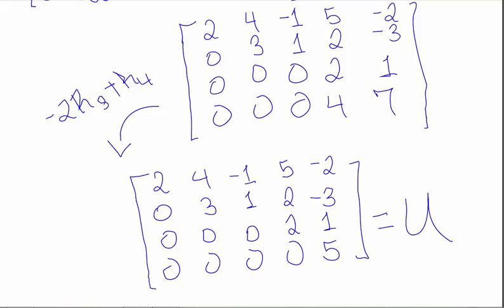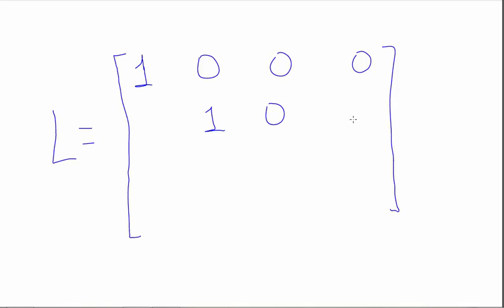And now we'll work on L. So L, since our original matrix had 4 rows, will be a 4 by 4 matrix. It's a lower triangular. And the diagonals are 1s. So the sequence of row operations I did to get U are important in finding L. Those same row operations need to be able to reduce L to the identity.